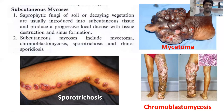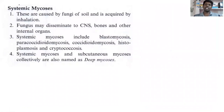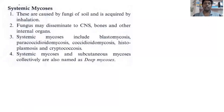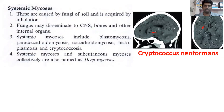Systemic mycosis, also called deep mycosis, involves fungal infections that spread throughout the complete body systems, like the central nervous system or respiratory system, infecting at the organ level. One best example is Cryptococcus neoformans infection, which infects the brain resulting in nodules — visible as fungal balls, masses of fungal growth growing inside the brain.